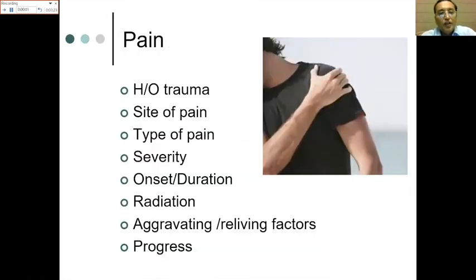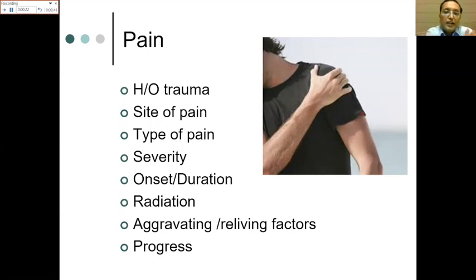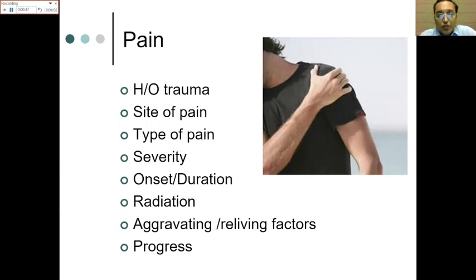First and foremost, ask about history of trauma — if significant, it could indicate traumatic pathology to soft tissue or bone. The second important thing is the site of pain. Pain at the anterior, slightly lateral and superior aspect of the arm, where patients typically hold when there is a shoulder problem, points toward rotator cuff issues.